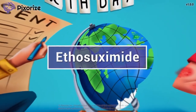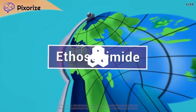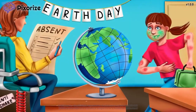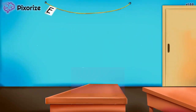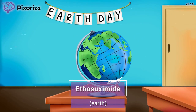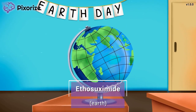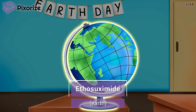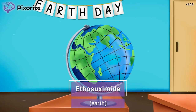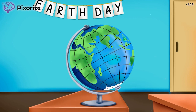Ethosuximide is a drug used to treat absence seizures. In this mnemonic video, we'll give you an easy way to remember everything you need to know about ethosuximide. Happy Earth Day! Today at school, I'm giving an Earth Day presentation to my class. See that big model of Earth in the front of the classroom? Use Earth to anchor you to this scene about ethosuximide, because Earth kind of sounds like ethosuximide — you can even think of it as Earthosuximide, if that helps.